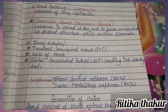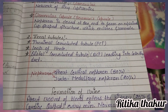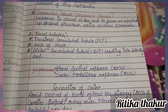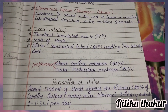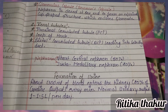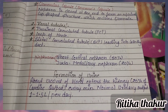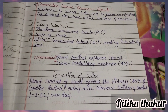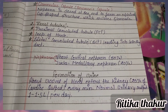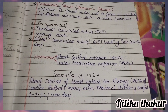Nephrons are classified as: short cortical nephrons (80%) and juxtamedullary nephrons (20%). Regarding urine formation, about 1300 ml of blood enters the kidney, representing 20% of cardiac output. Normal urine output is 1 to 1.5 litres per day.